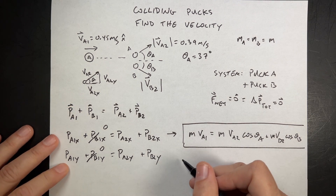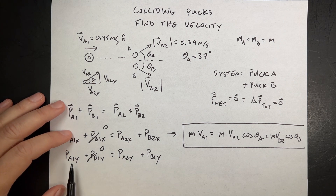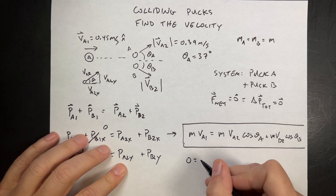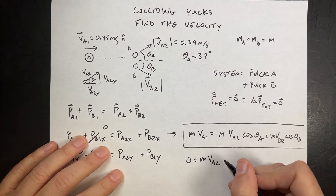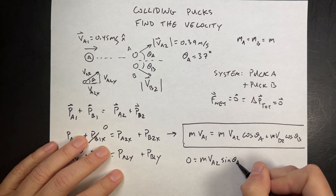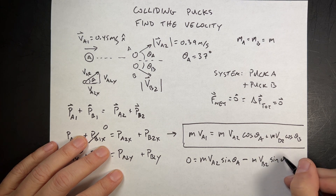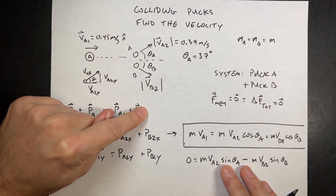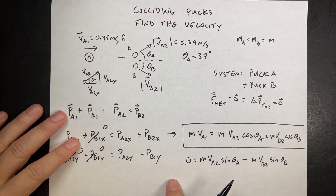Now the y-equation is actually easier. What's the y-momentum before the collision? It's not moving in the y direction — it's moving horizontally — so that's 0 too. So I have: 0 = M·VA2·sinθA − M·VB2·sinθB. That minus sign is there because if the positive x direction is defined, puck B must have a negative y component — one of them has to be negative for the total to be zero.